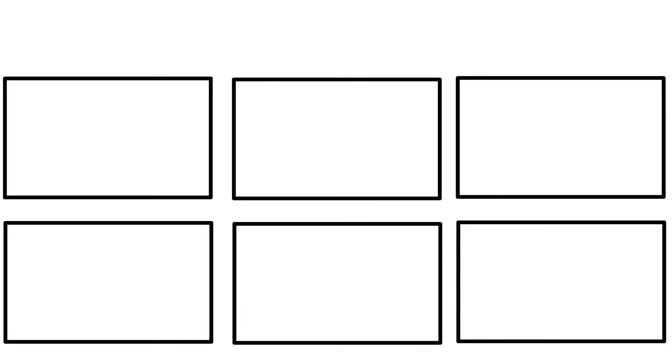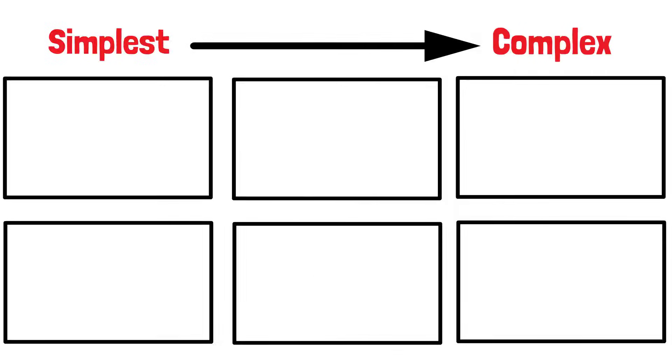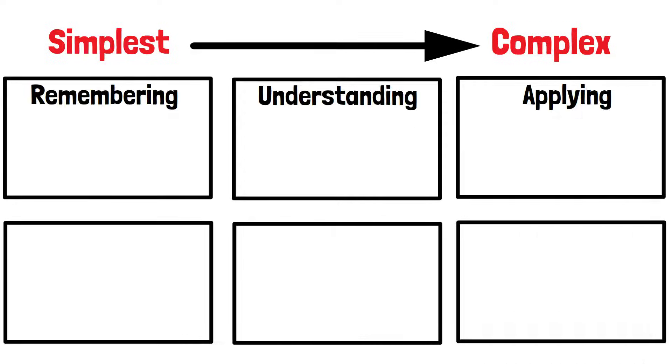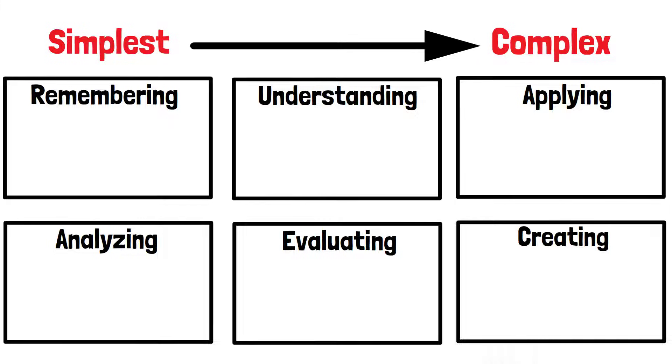The taxonomy has six levels, starting from the simplest to the most complex: remembering, understanding, applying, analyzing, evaluating, and creating.